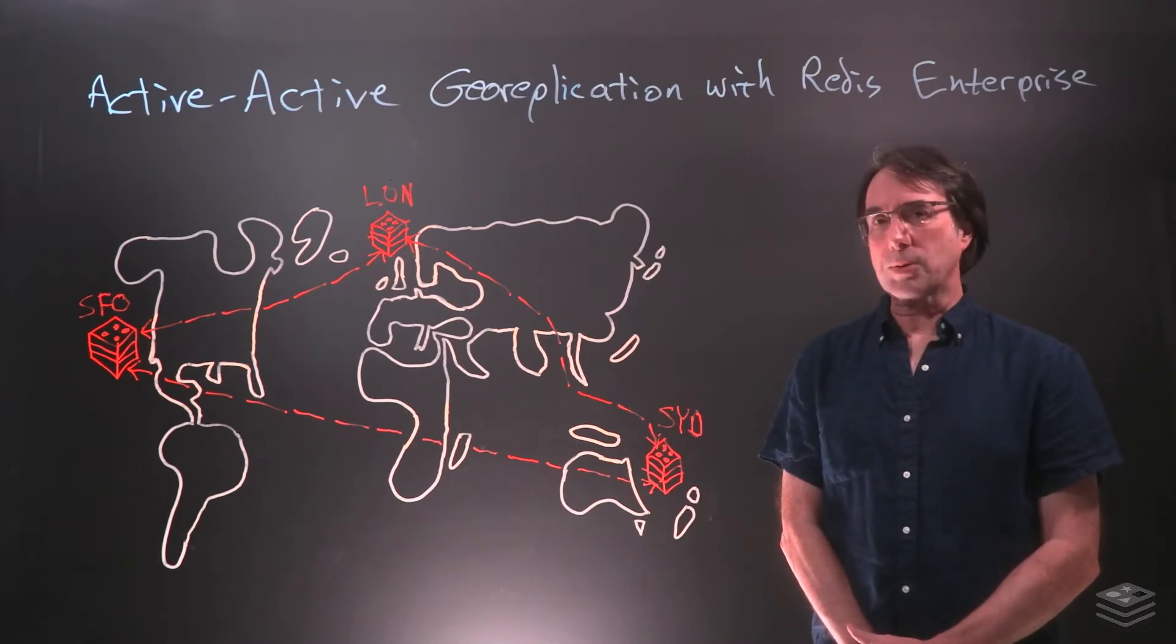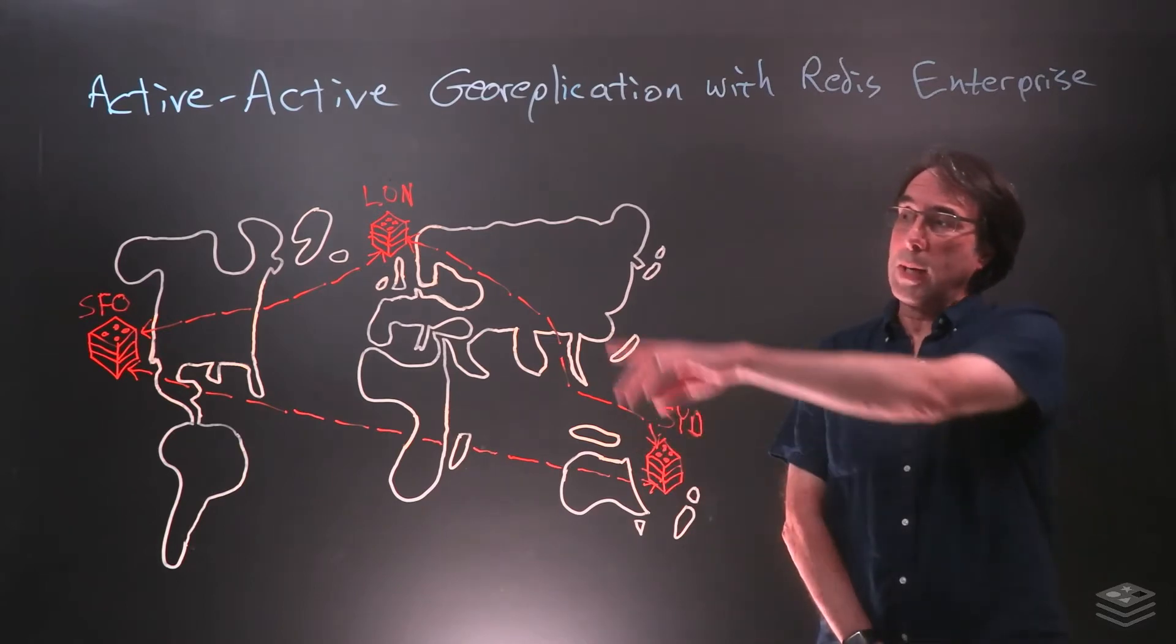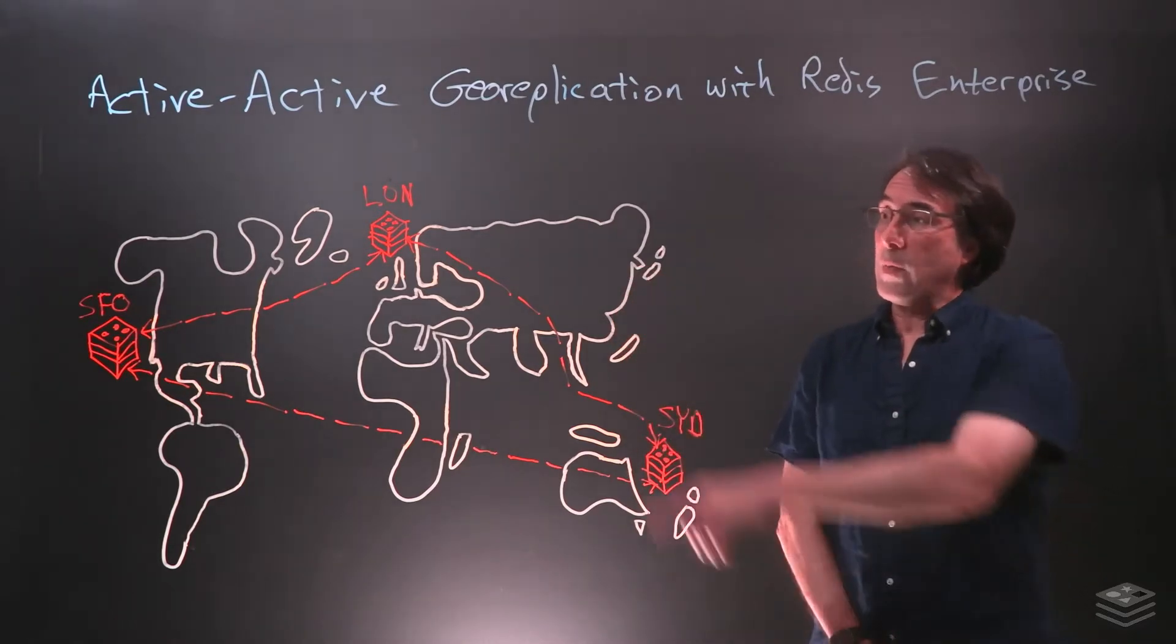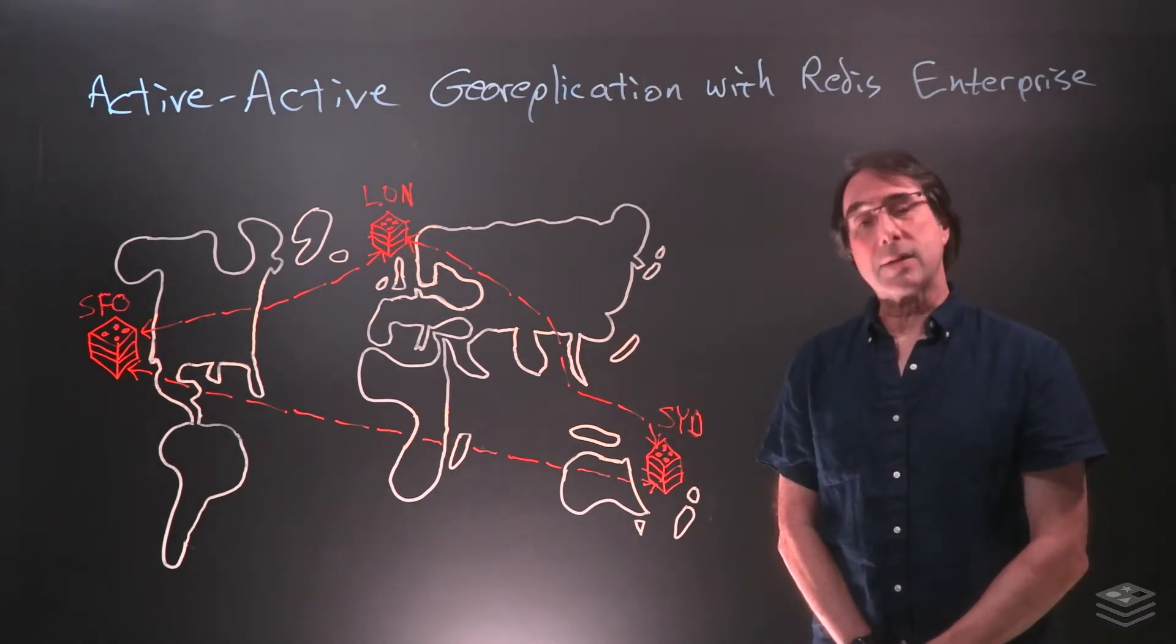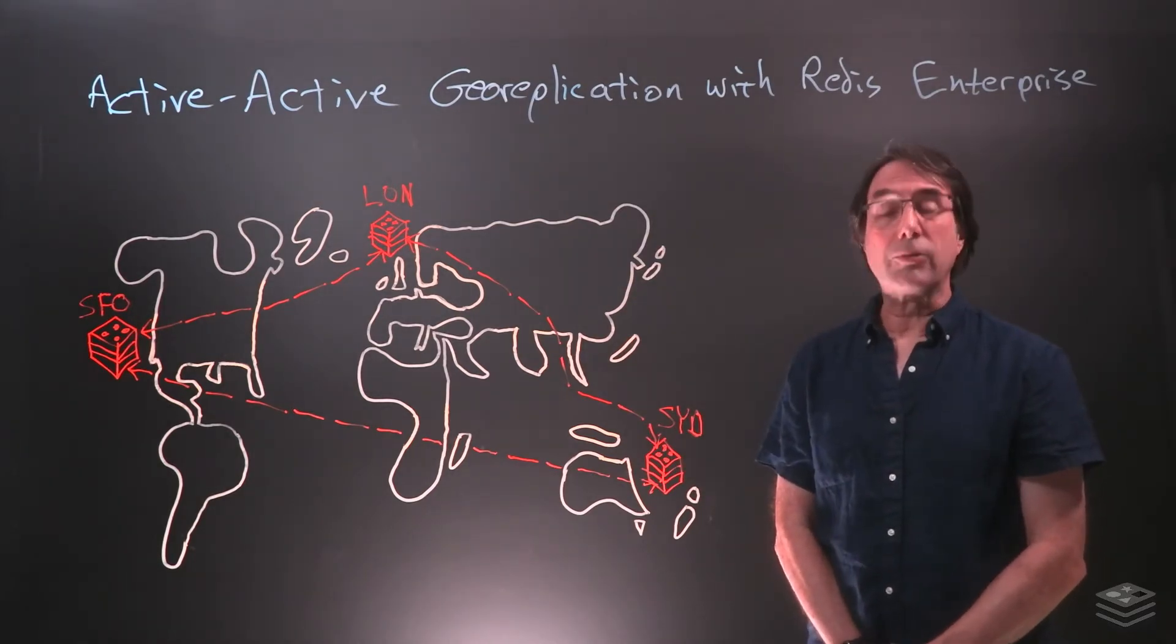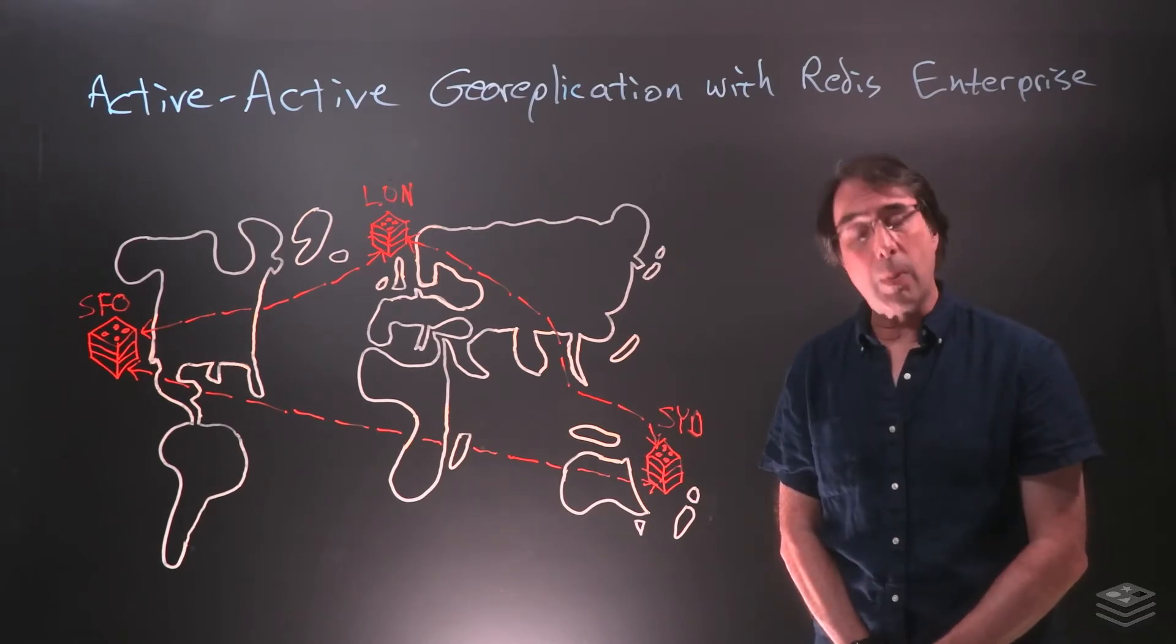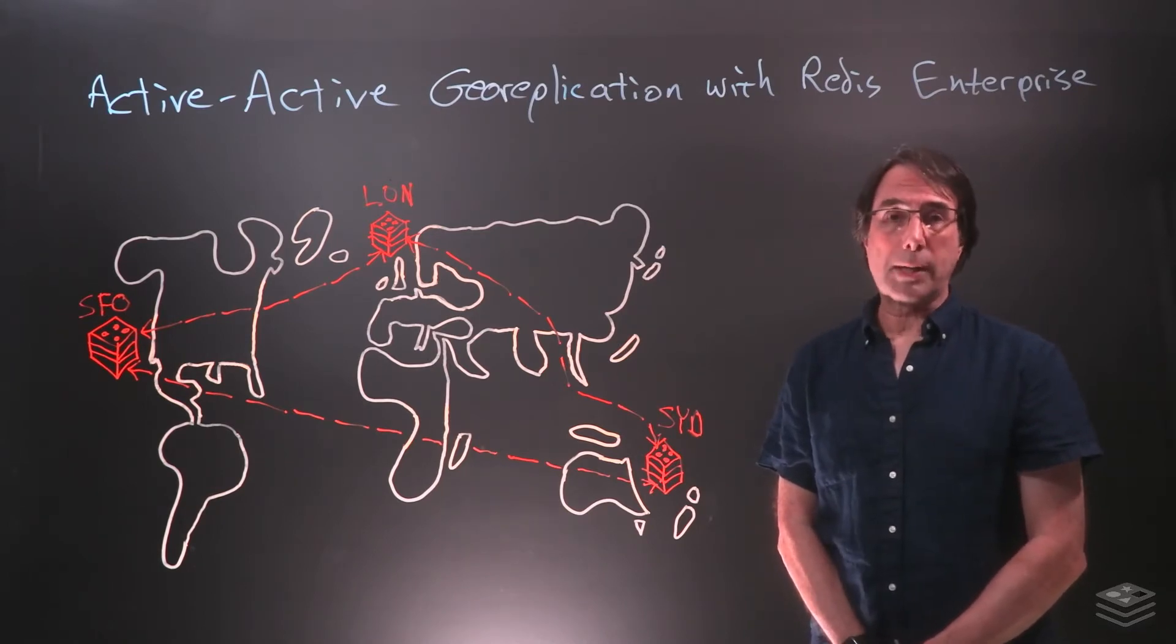Before we talk about the use cases, a word about our scenario here. We have a database with three ActiveActive replicas. They are in San Francisco, London, and Sydney. And since we're using ActiveActive, anyone can change any of those replicas at any time, and all the changes will be reconciled so that all the replicas are correct and consistent.